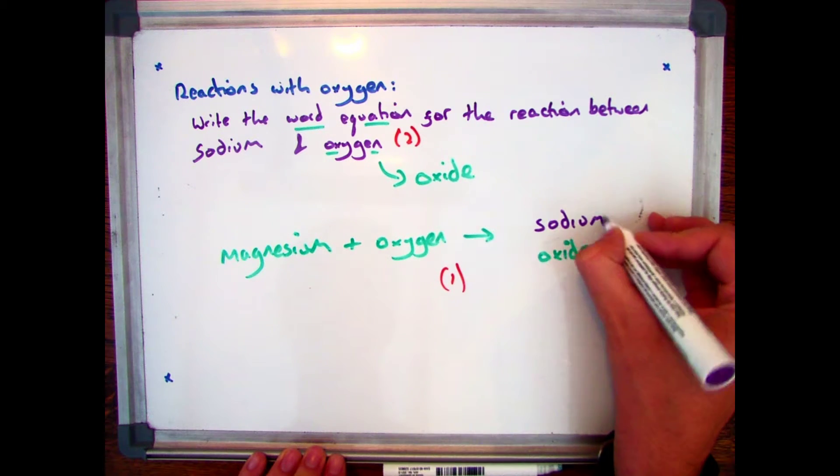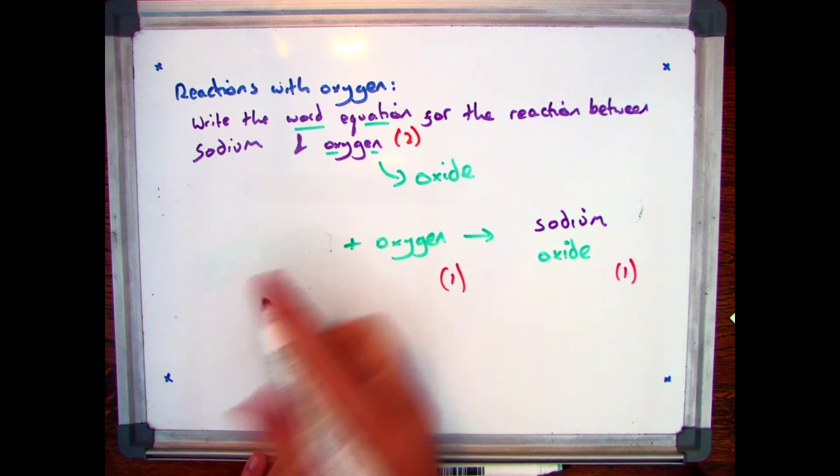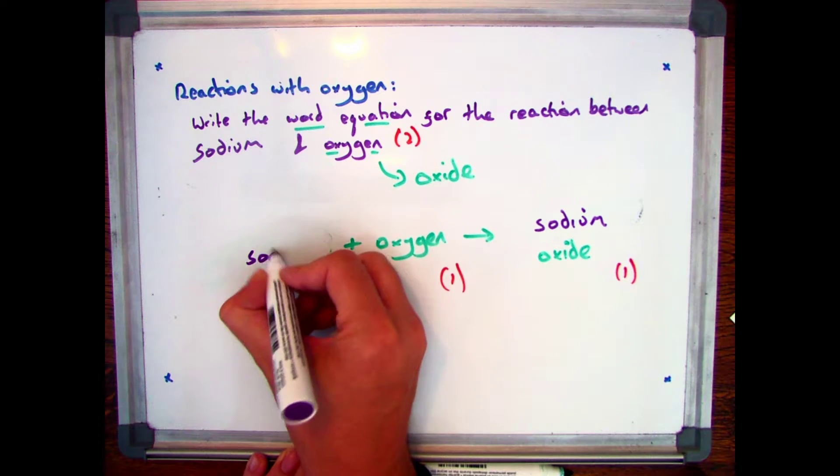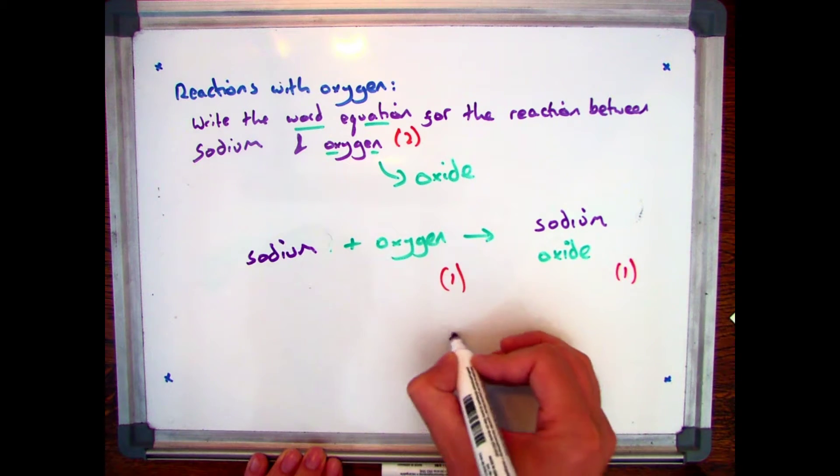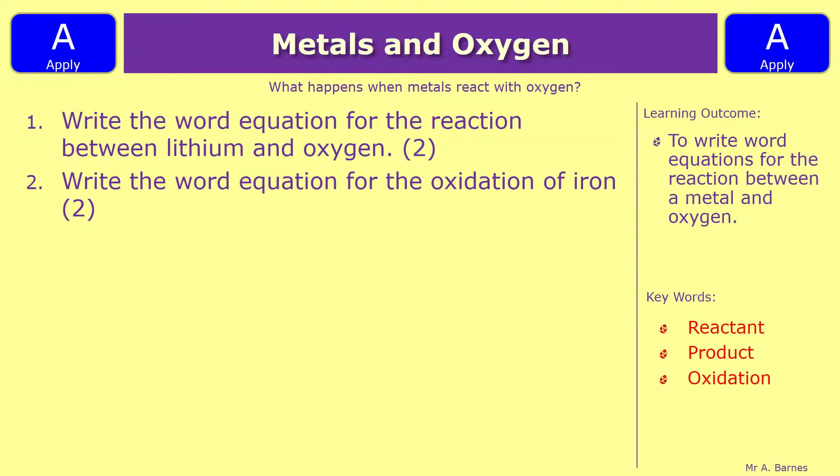And then obviously my reactants, it's sodium plus oxygen, and that is exactly the same all the way throughout. Two quick questions then. Number one, write the word equation for the reaction between lithium and oxygen. And number two, write the word equation for the oxidation of iron. Both exactly the same questions, just slightly different wording. Pause the video, have a go at them both.